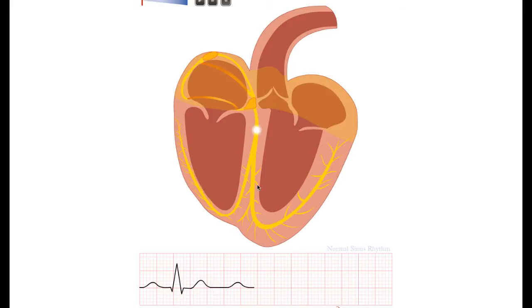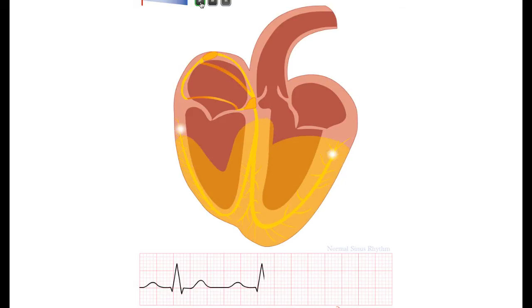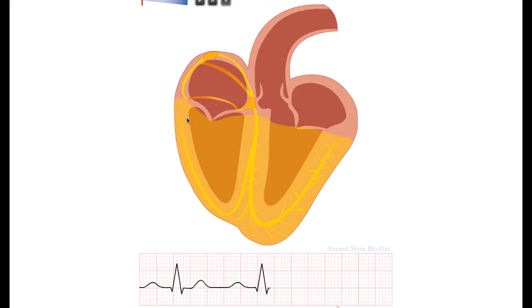Then the electricity jumps through the conduction system, through the His bundle, and the left bundle towards the left part of the septum. Then the septum is activated from left to right, resulting in a small Q wave in lead 2, as the electricity is going away from your point of view. Then the thick left heart muscle is activated, resulting in a high R wave. And then the basal parts of the heart are activated, resulting in a small S wave in lead 2.